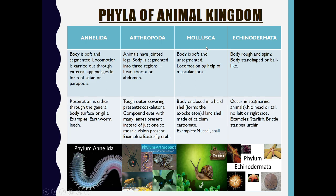Coming to Phylum Mollusca: the animals under this category have a soft and unsegmented body. They carry out their locomotion with the help of a muscular foot. Their body is enclosed in a hard shell which forms the exoskeleton, and that hard shell is made up of calcium carbonate. Examples of this category are mussel and snail.